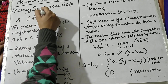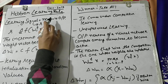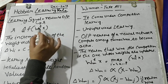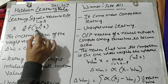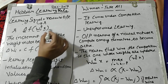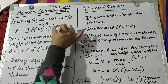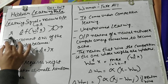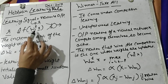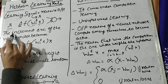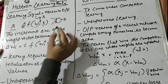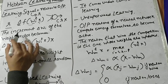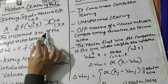The learning signal is denoted by r. In Hebbian learning rule, the learning signal is equivalent to the neuron's output — that means how you compute your neuron's output based on the weighted values and the input values. When you multiply and sum up all those values, you get an output value from that neuron. The general learning signal formula is c*r*x.